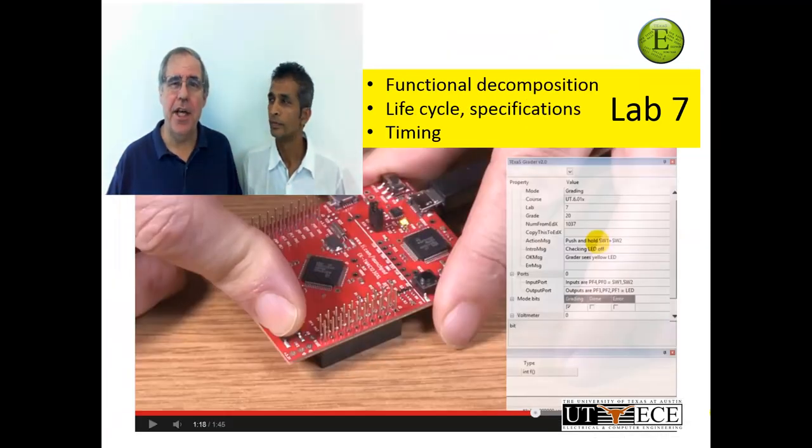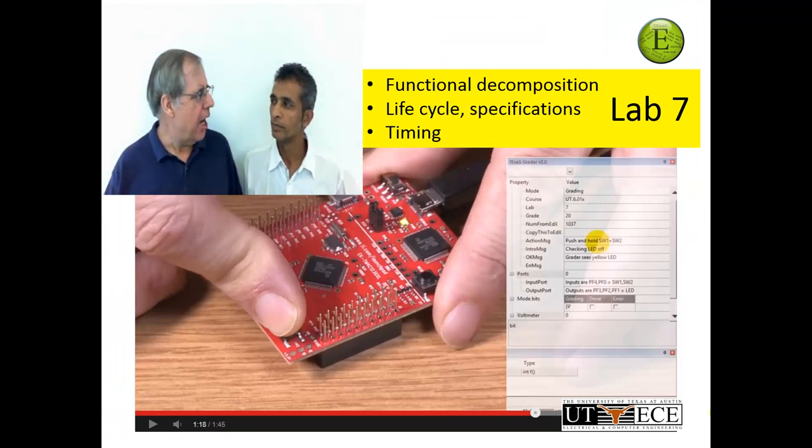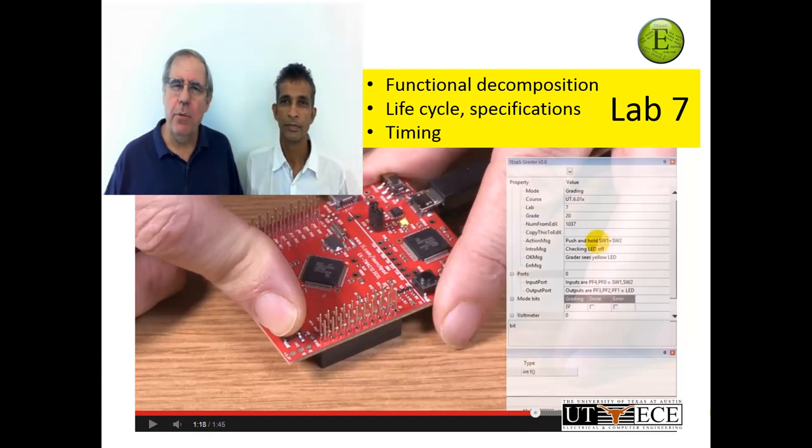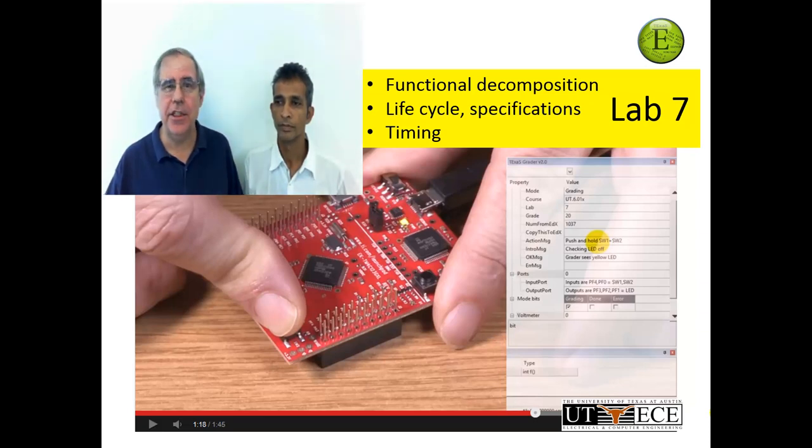Then in lab 7, we introduced the development lifecycle, the product lifecycle. And what we started with were specifications, and then we went to design and implementation and testing. And we did that whole process using a concept called functional decomposition, which was to break down a complicated problem into smaller pieces. And again, timing was a big deal, and so we learned how to both measure and control time.